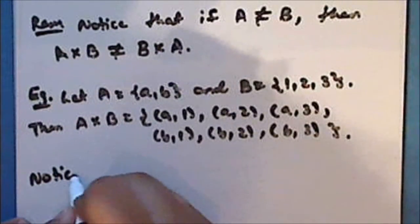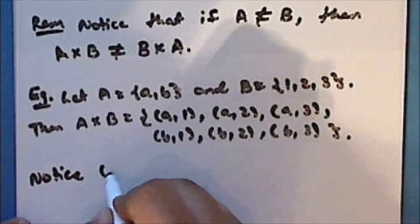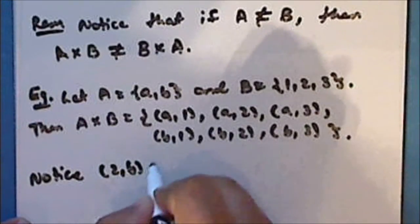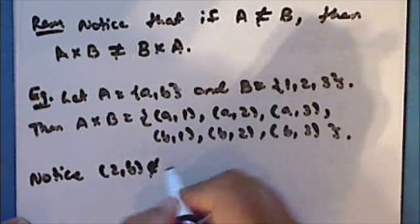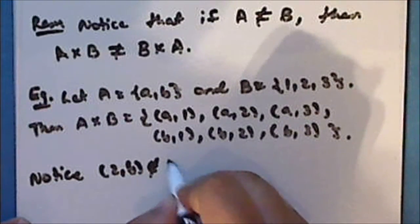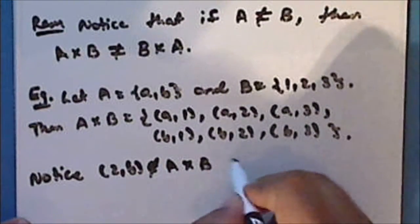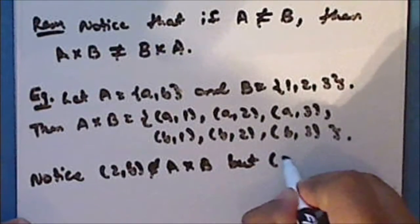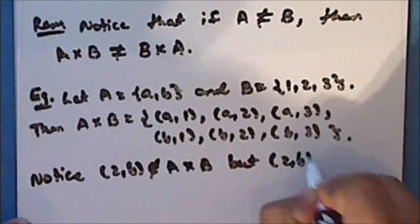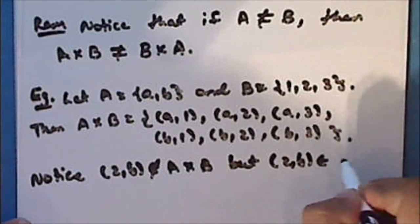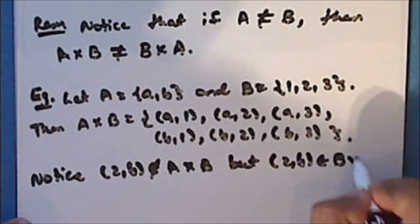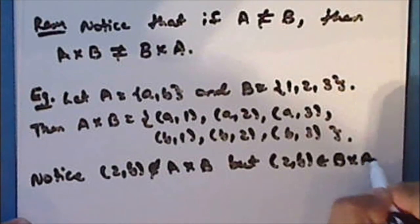Notice that the ordered pair (2, b) is not an element in A cross B, but the ordered pair (2, b) is an element in the Cartesian product B cross A.